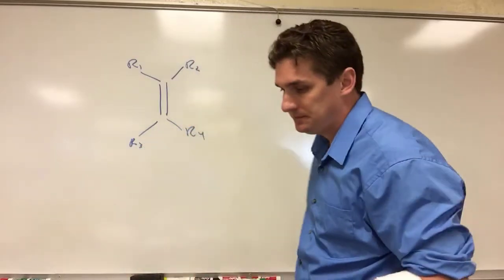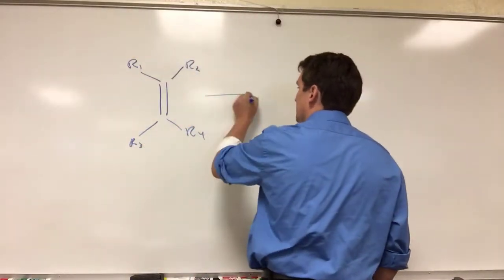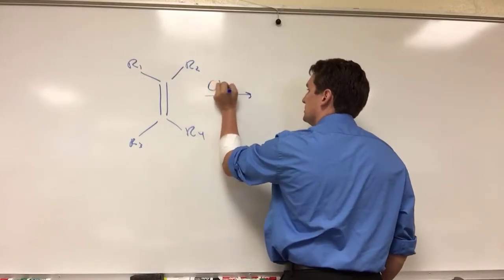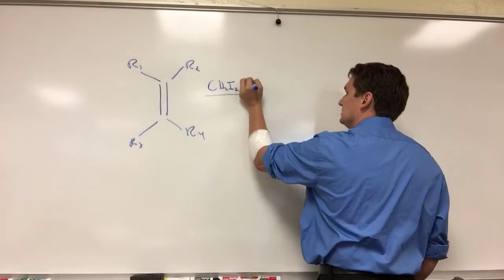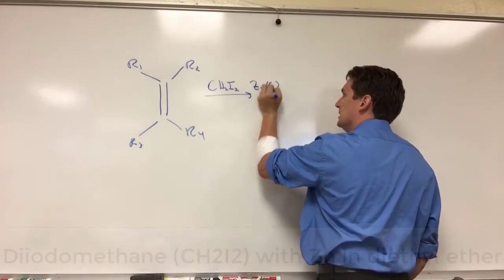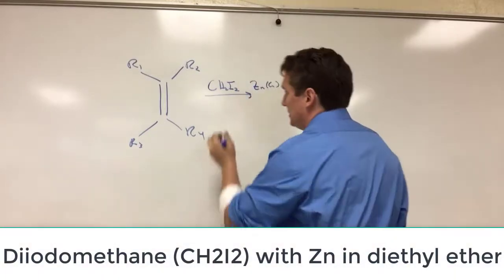So the Simmons-Smith reaction is that we take CH2I2 and zinc promoted with copper and we need to do this in diethyl ether.